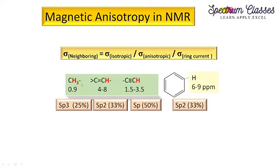From CH3 to C double bond CH, if hybridization alone can explain the trend, then the acetylene molecule should have a higher chemical shift value than the alkene molecule. But here we are having a lesser value, so it means something else plays a vital role in deciding the chemical shift value. That effect is actually magnetic anisotropy.